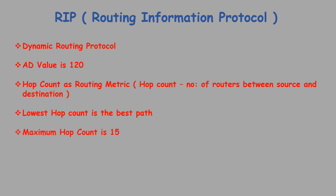RIP prevents routing loops by limiting the number of hops allowed in a path from source to destination. The maximum hop count allowed for RIP is 15, and a hop count of 16 is considered as network unreachable.